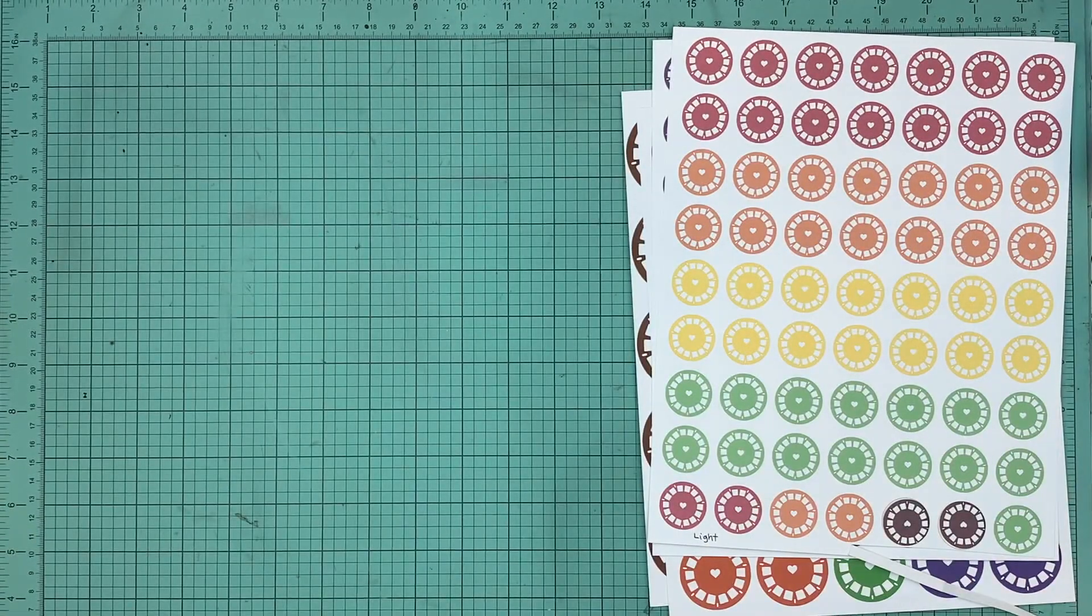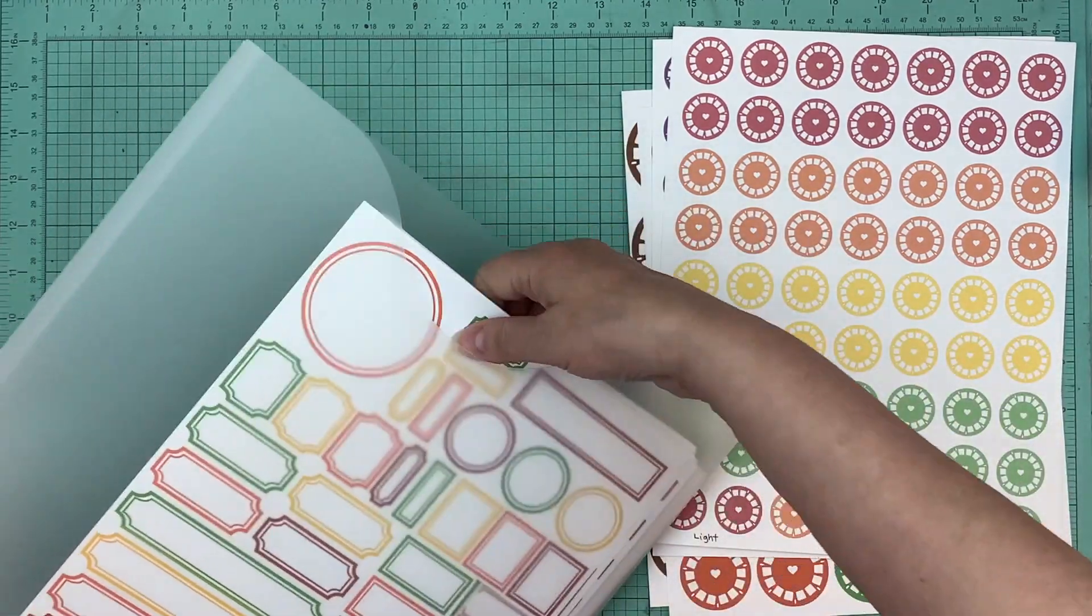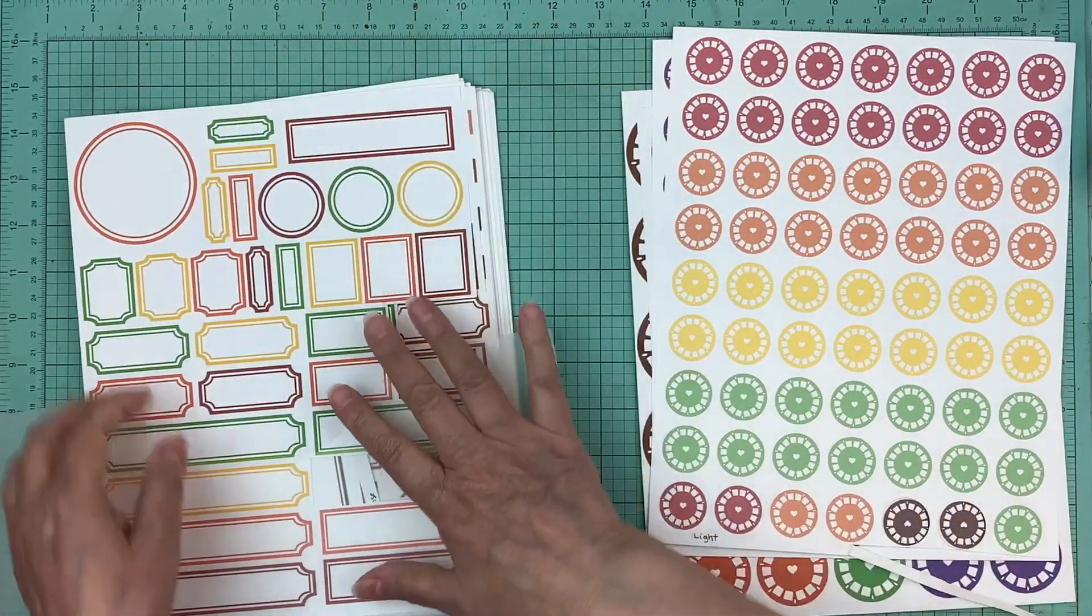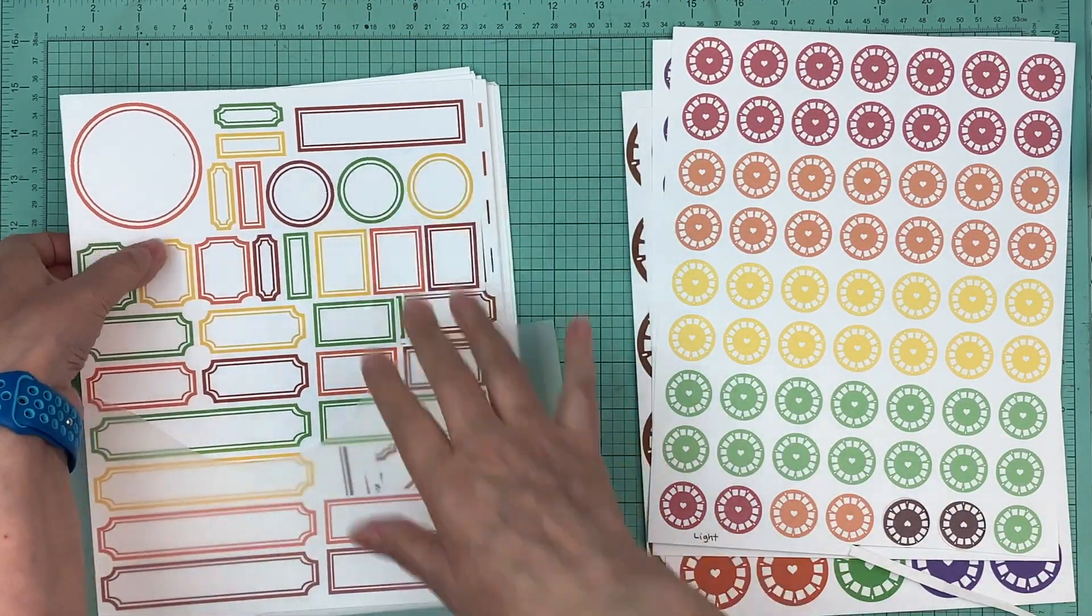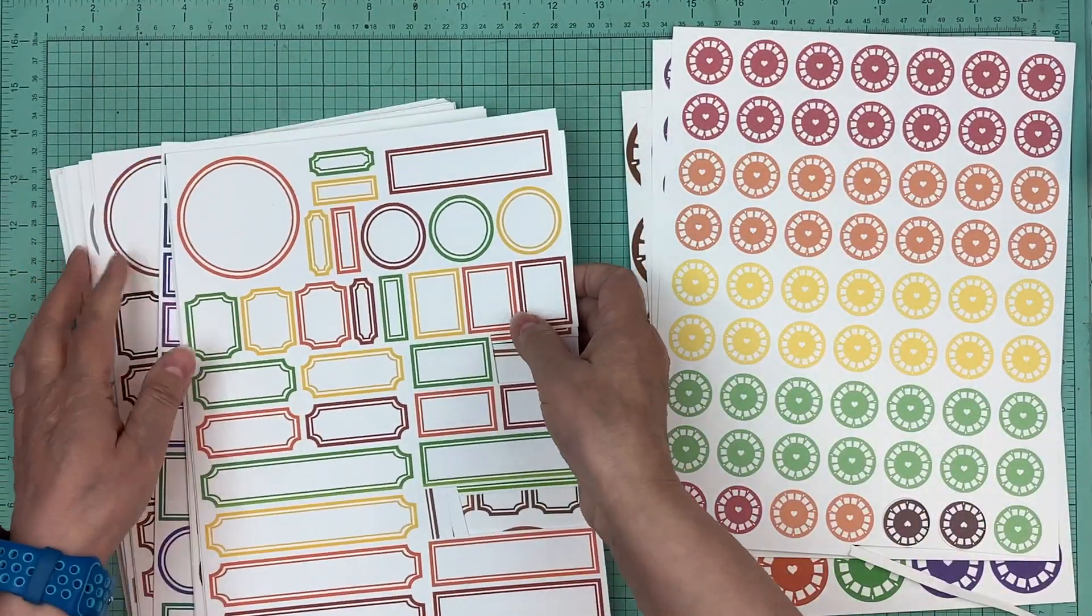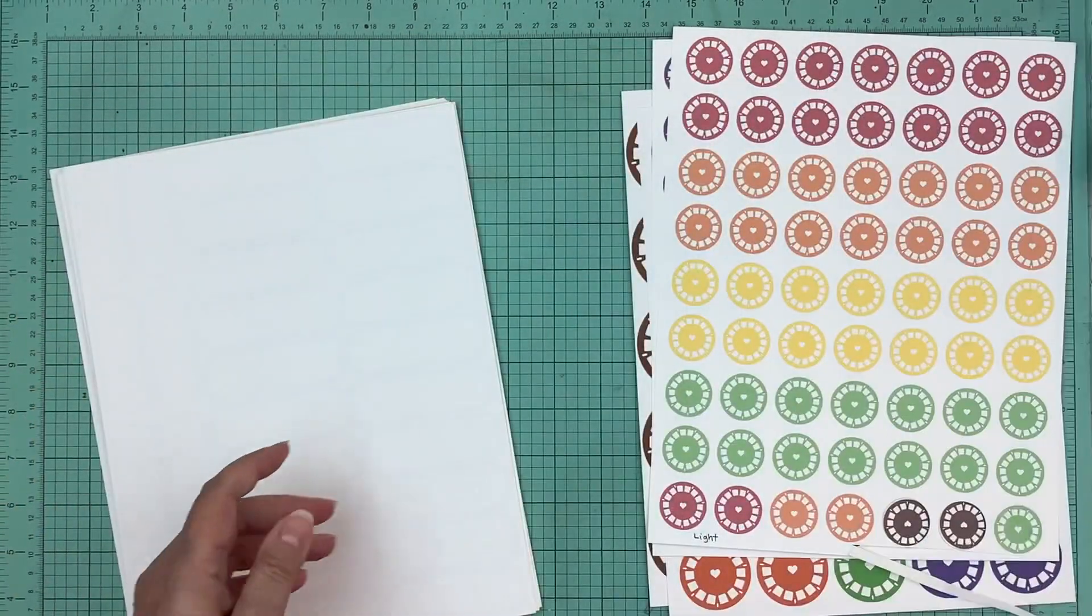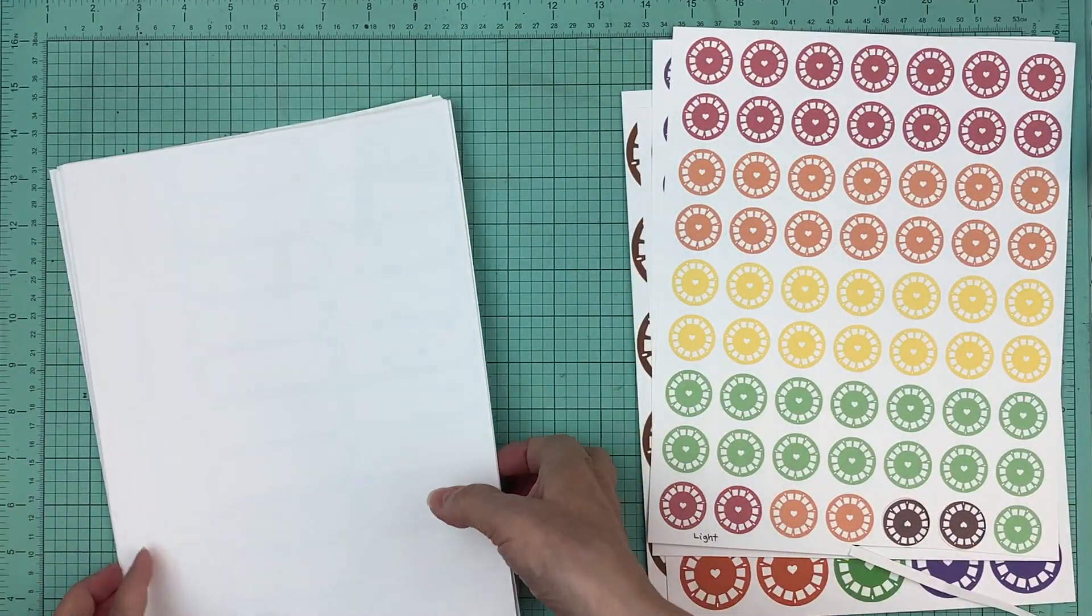And then the next one we have is just the regular labels. These are the first labels that we had available. So again it comes in all the assorted and the single colors.